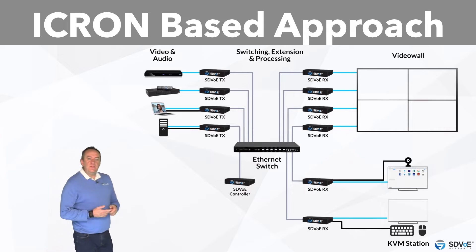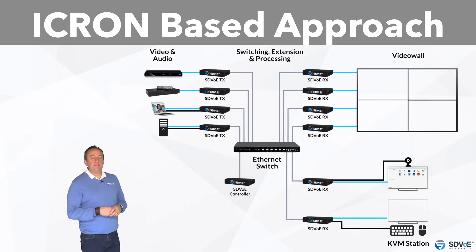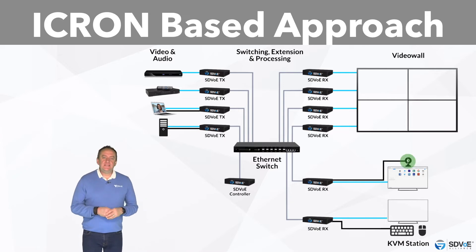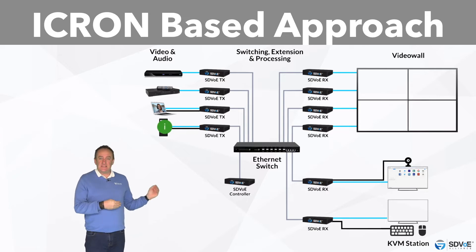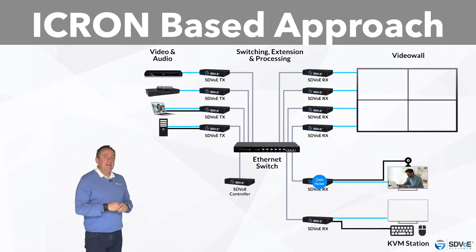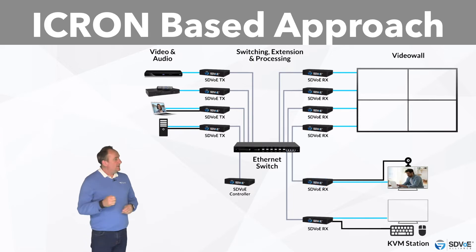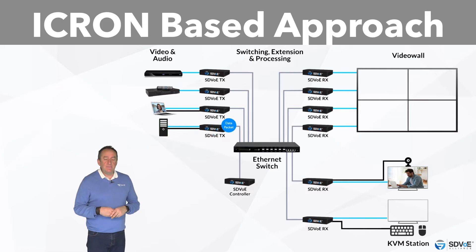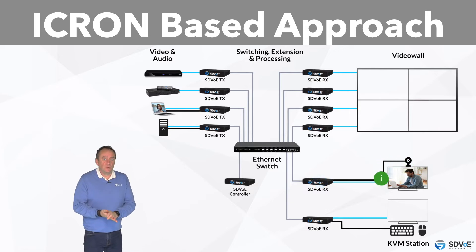Let's begin with the iKron-based approach, as it's actually the more simple method to understand. iKron have created a technology which enables USB signals to pass through a distributed system in a way which is totally transparent to the USB device and host. There is some technical magic going on to make sure that the USB protocol itself works even despite cable and network induced delays in the signals.